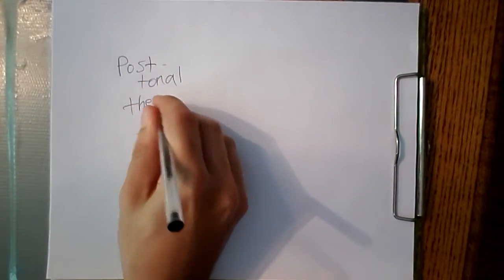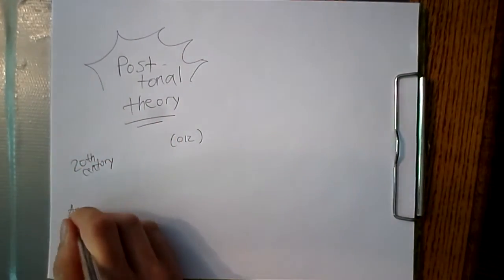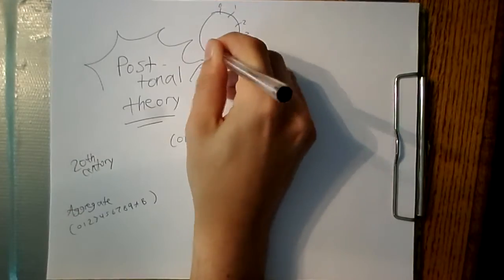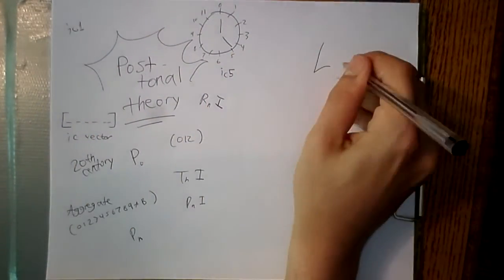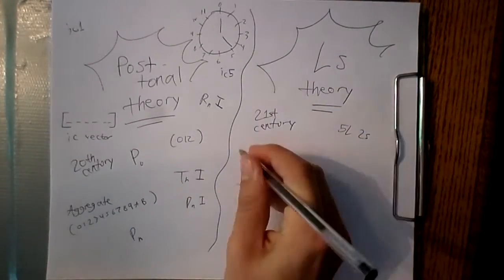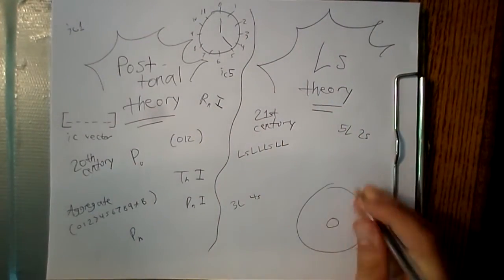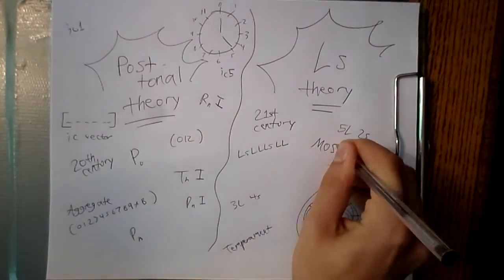One type is called post-tonal theory, which is probably something you will learn about in college or have already learned if you are a music student. The second type of theory is a more recent development called LS Notation informally, which is more useful in microtonal scale understanding.